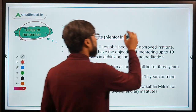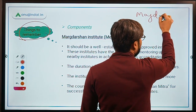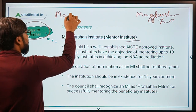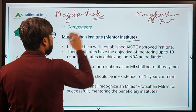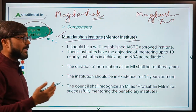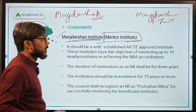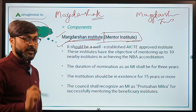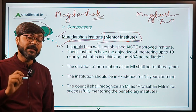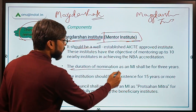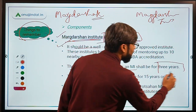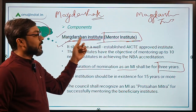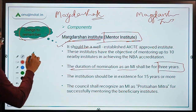There are two important components of this scheme. The first is the Marg Darshan Institute, and the second is the Marg Darshak. Let's talk about the Marg Darshan Institute first, which can also be regarded as the mentor institute. This institute should be a well-established AICTE-recognized institute with at least 15 years of experience. The duration of nomination as a mentor institute shall be three years, and one mentor institute can provide mentorship to not more than 10 beneficiary institutes.